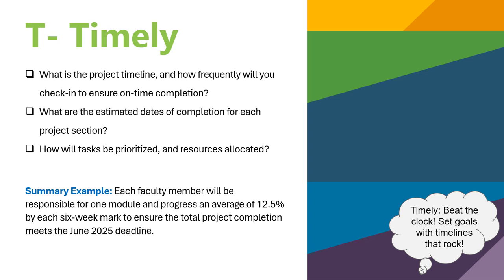For example, each faculty member will be responsible for one module and progress an average of 12.5% by each six-week check-in mark to ensure the total project completion meets the June 2025 deadline. By the end of this stage, your SMART goal planning is complete and can also be condensed into one concise summary.